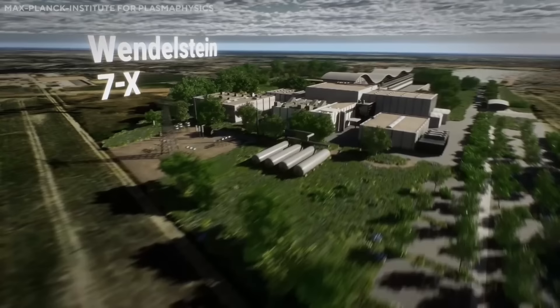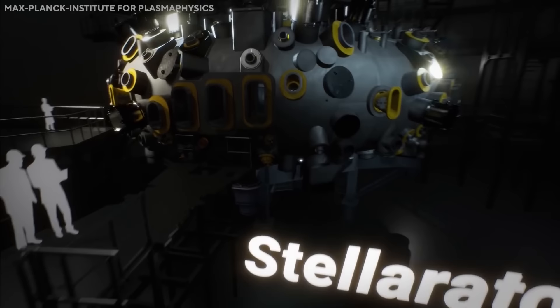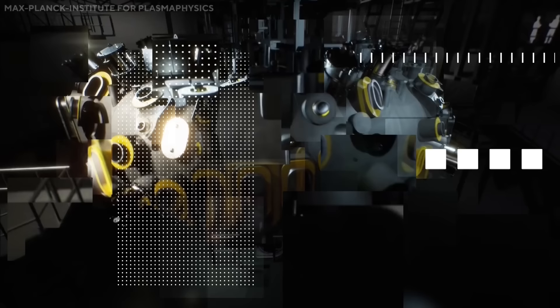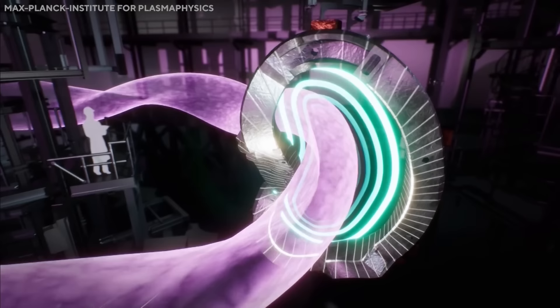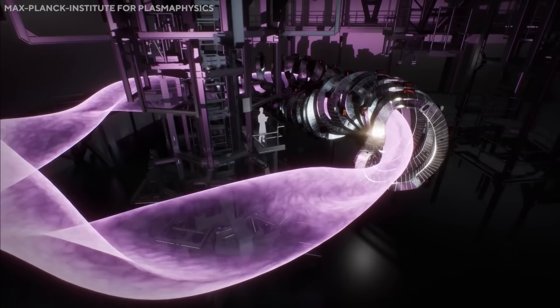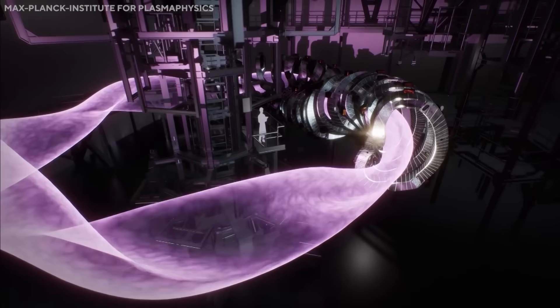The stellarator is the focus of the Wendelstein 7-X project, a German experiment that is the largest and most advanced stellarator in the world. Wendelstein 7-X aims to demonstrate the feasibility of a stellarator as a fusion power plant by achieving high plasma densities, temperatures, and confinement times. Wendelstein 7-X started plasma operations in 2015 and is undergoing upgrades to increase its heating power and plasma duration.